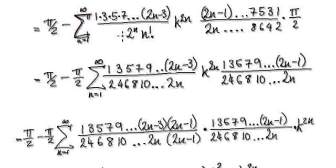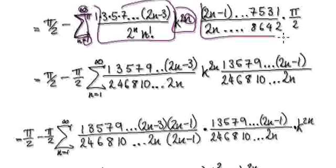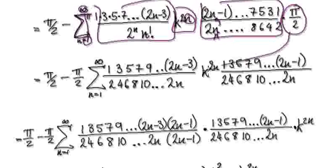You have your summation here with n moving from 1 to infinity. This block contains n moving about, this block contains n moving about, this block contains n moving about. But this thing here doesn't contain n, so you can take it outside the summation. That gives us this.